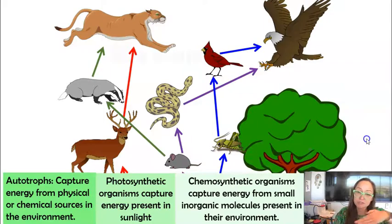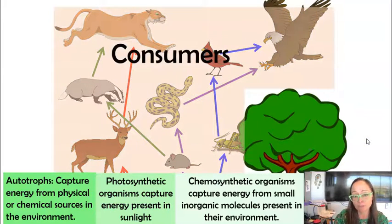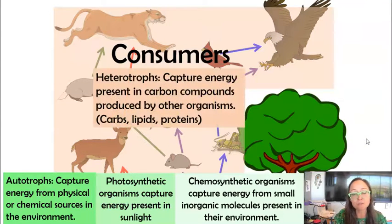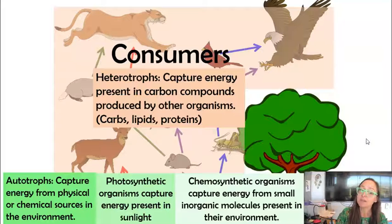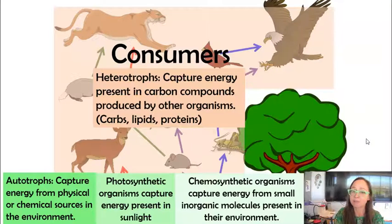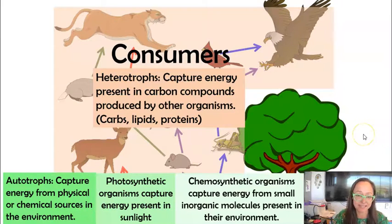Above the producer level in a food web or food chain, we have consumers. Our consumers are our heterotrophs. Heterotrophs have to eat to get their energy. They capture energy present in carbon compounds—carbs, lipids, and proteins that we eat. Through the process of glycolysis and aerobic respiration, we can break those macromolecules down and harness that energy. Heterotrophs do not do photosynthesis; they have to eat to get their energy.